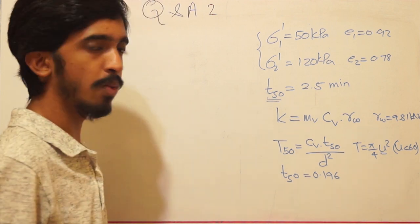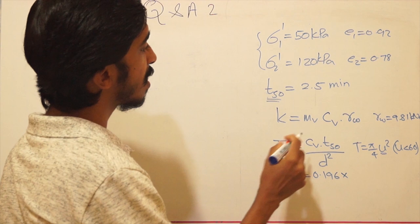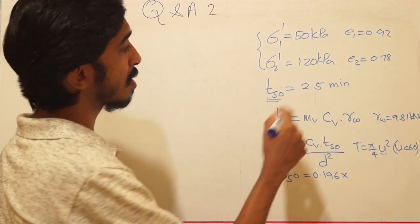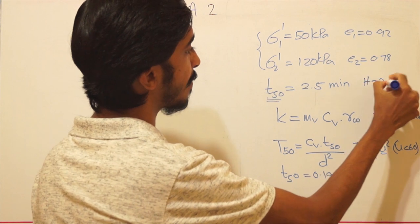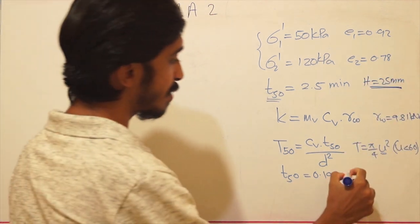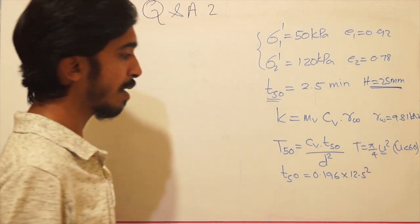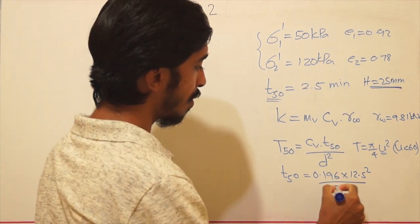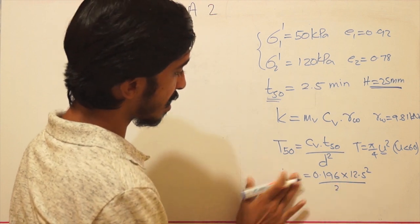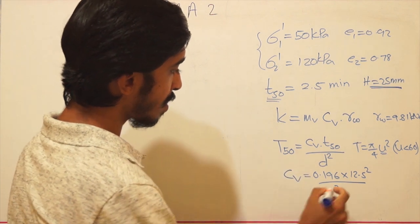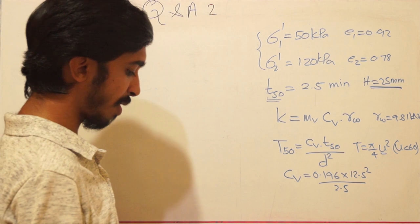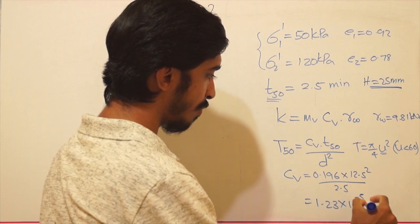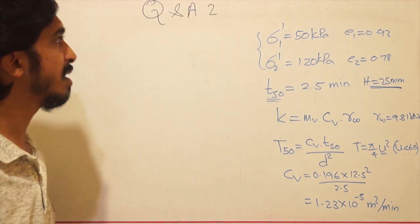T50 = 0.196, from the equation T = π/4 × U² for U less than 60%. The specimen is 25 mm thick with both-way drainage, so d = 12.5 mm = 0.0125 m. With t50 = 2.5 minutes, we calculate cv = T50 × d² / t50 = 1.23 × 10⁻⁵ m²/min.